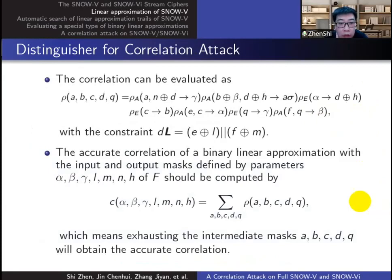For SNOW-V, we can get the accurate correlation by exhausting the intermediate masks a, b, c, d, and q.